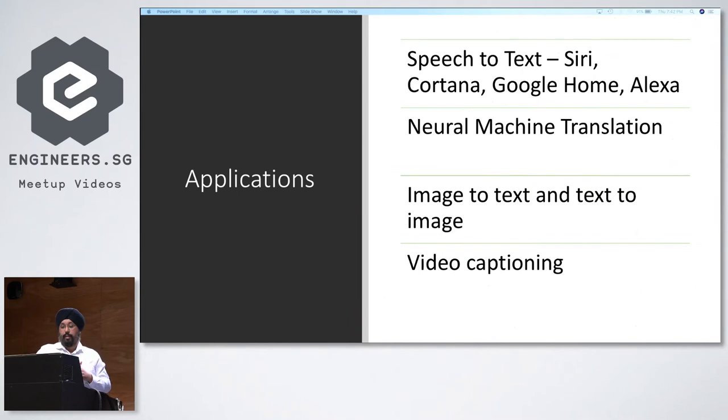They became very popular, the LSTM models, and they started getting used in various applications. Your speech to text, all your conversational agents, and as we just saw in the generative part, we are using such RNN or LSTM based sequence-to-sequence models, neural machine translation, image text, video captioning. These are some of the applications.